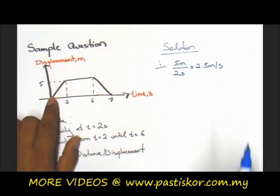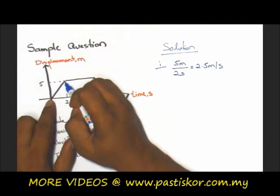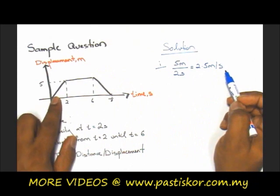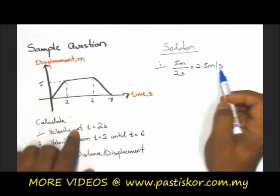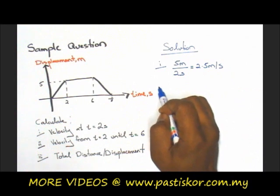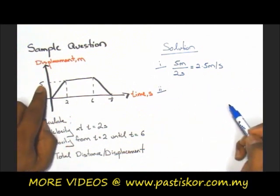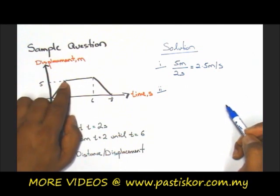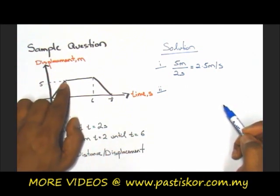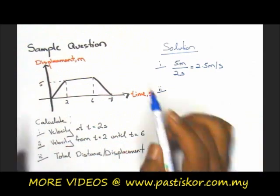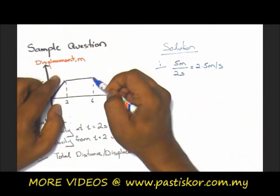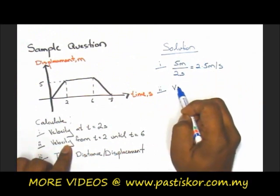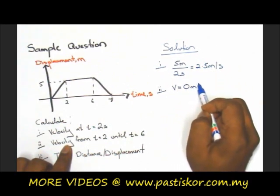Remember, guys, that the velocity is fixed. That means all the way until time equals to 2 seconds, your velocity is 2.5 meters per second. Now, from time 2 to time 6, you can see that the displacement is exactly the same — there is no increase in displacement. So from time 2 to time 6, the vehicle or car is not moving. Because it's not moving, your velocity technically equals to 0 meters per second.